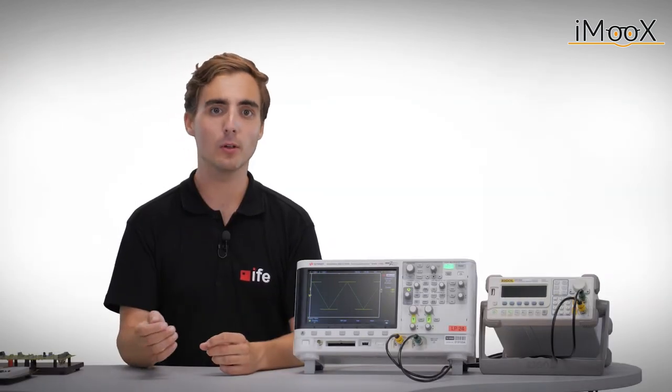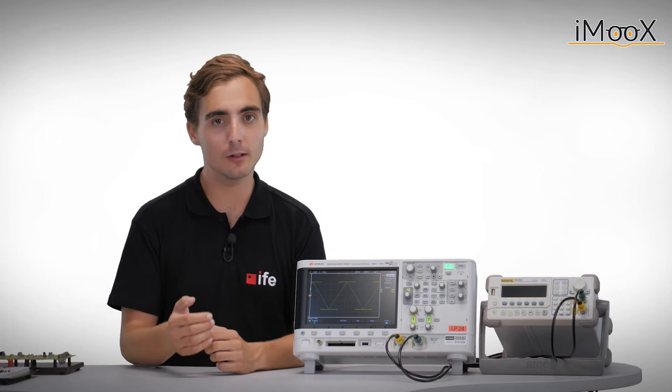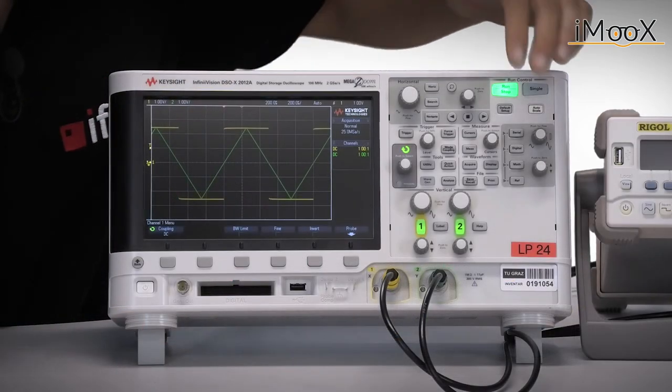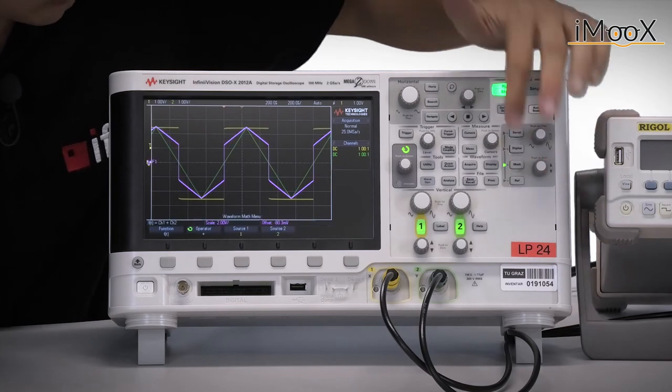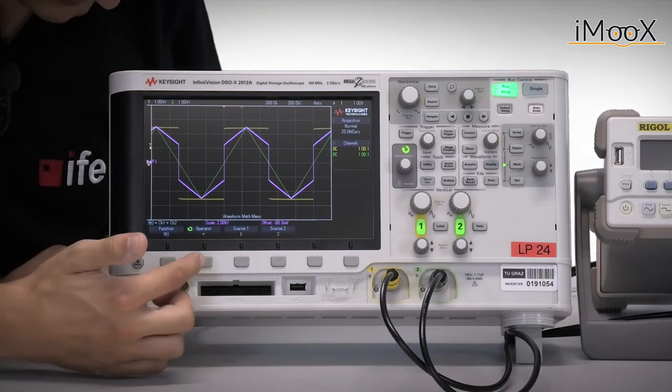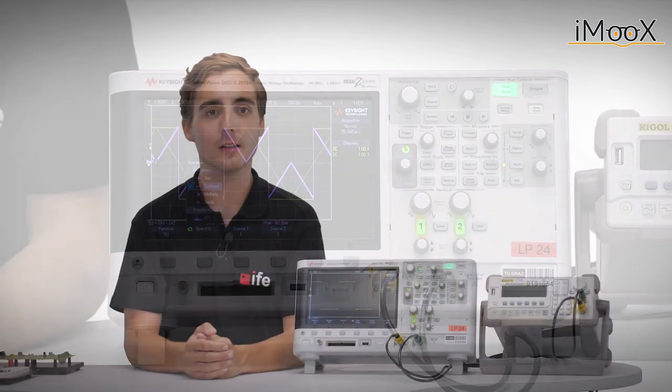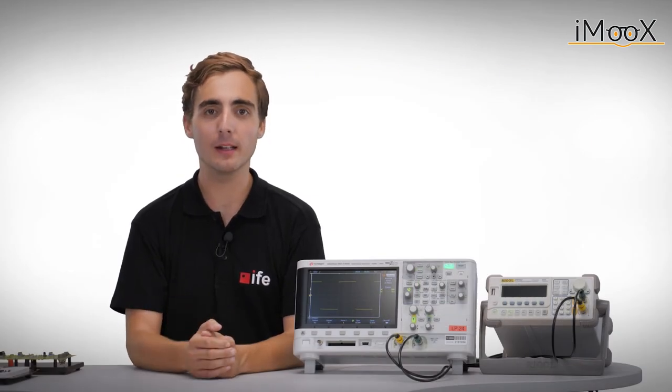To give an example, we subtract a triangular from a rectangular signal. Therefore, we go to the math menu and select the difference function.